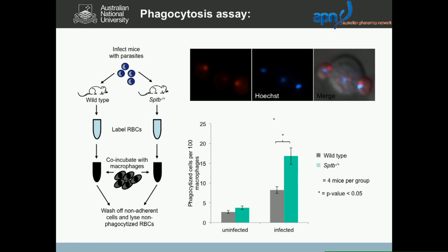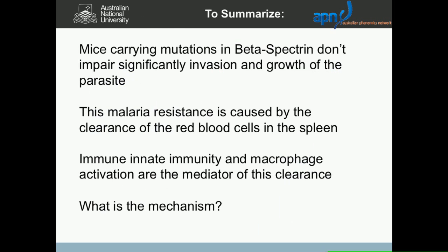To recap, the story is: the mice that carry these beta-spectrin mutations don't impair growth and invasion — that's not the mechanism. The mechanism goes with the clearance of the red cell within the spleen, but not only the spleen — probably also the circulation and the liver. The trigger is the activation of innate immunity and macrophage activation.